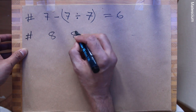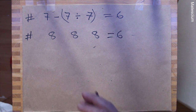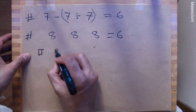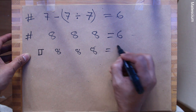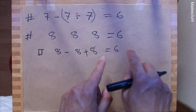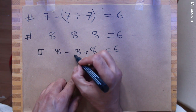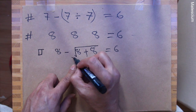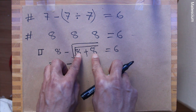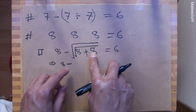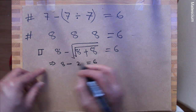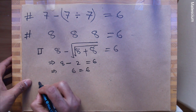Eight, eight, eight equals six. There are several possibilities. First possibility: I introduce a minus sign here and a plus sign here — that's not enough to make the left-hand side six. So I introduce a square root first, then another square root. Eight minus the square root of eight plus eight equals the square root of sixteen, which is four. Then square root of four equals two. So eight minus two equals six. This is one possible solution.